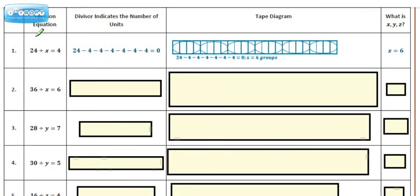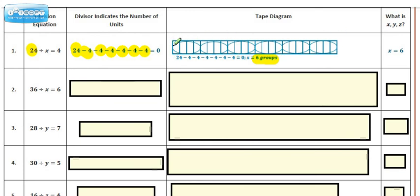I suggest you hit the pause button and try to work these out on scrap paper, then check back to see if you have the right answers. But let's look at the example first. The dividend here is 24, and we can see that we're ending up with 4 as an answer. Do you see how we're subtracting 4, subtracting 4, subtracting 4 — six times total? So if we had to draw a model of that, we end up with 6 groups. Starting with 24 and subtracting 4 each time, that's how you get x is equal to 6.